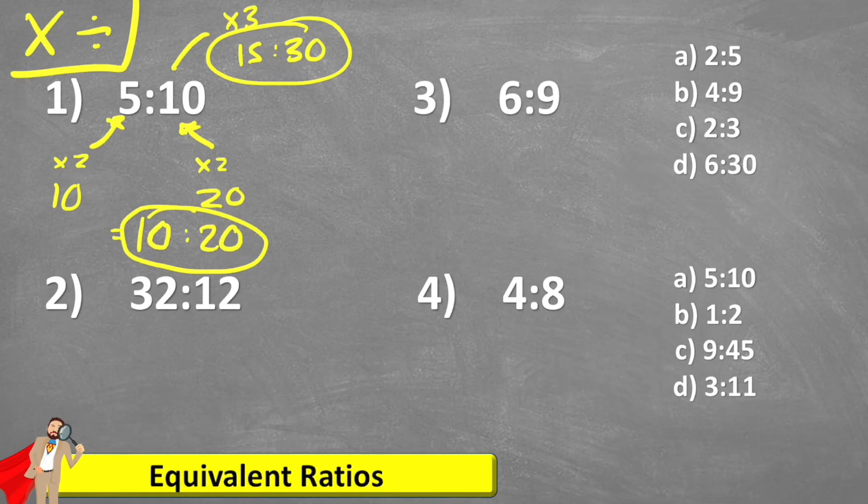But don't forget, I can also divide, but I have to make sure I divide both numbers by the same number. So essentially, I'm looking for factors. And I can see that common factors of five and 10 would be five.